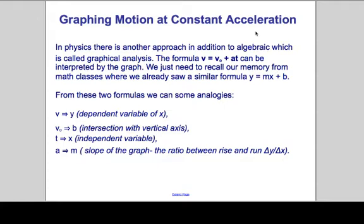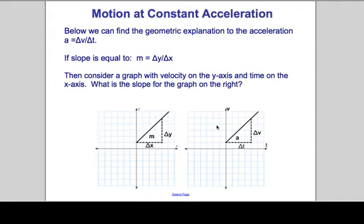We just need to recall from math class a similar formula: y = mx + b. Final speed corresponds to y, initial speed corresponds to b, m corresponds to acceleration, and t corresponds to time. These are analogous. Looking at the velocity graph for an object experiencing constant acceleration, we see both are linear equations. Starting with some positive acceleration, as time goes by velocity goes up, giving a straight-line relationship.